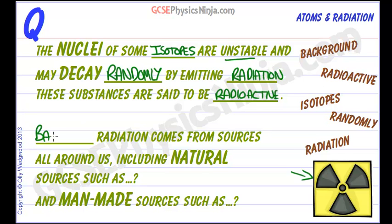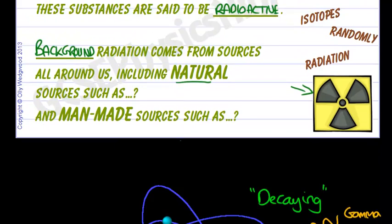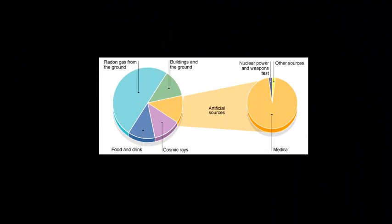Background radiation. Background radiation is all around us. It comes from sources all around us, including natural sources. And the natural sources of background radiation are things like radon gas, which is all around us in small concentrations. It can come from cosmic rays from the sun and from outer space. It can even be in your food and drink and buildings and the ground.